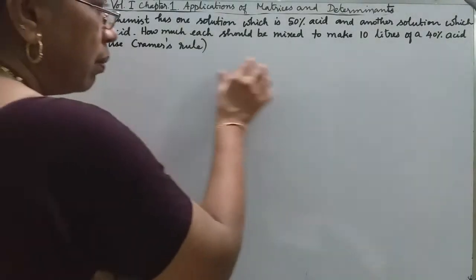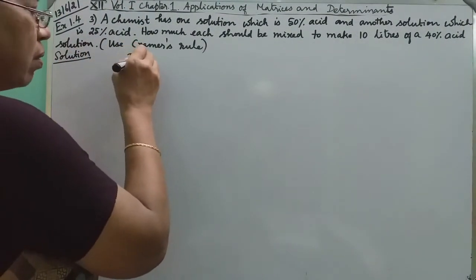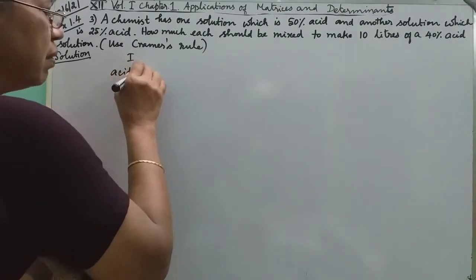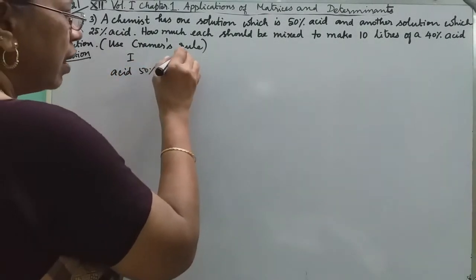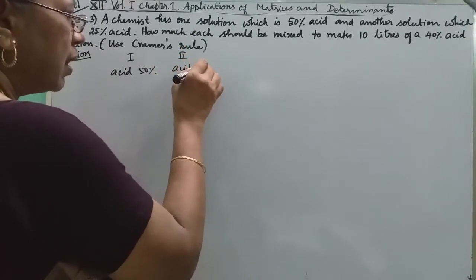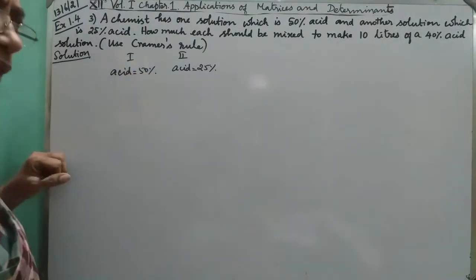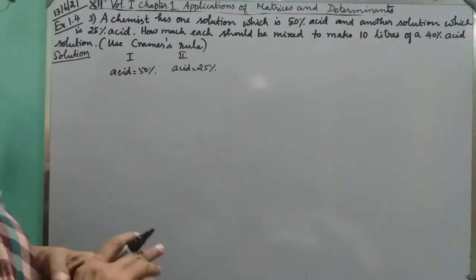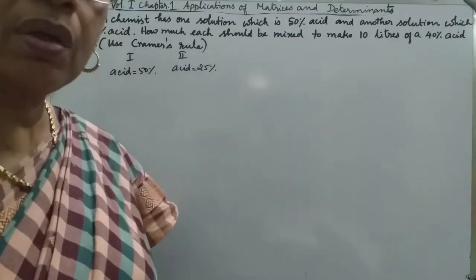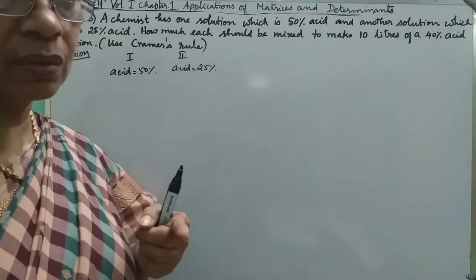So, we have two bottles. In the first bottle, the acid is 50%. In the second bottle, the acid is 25%.